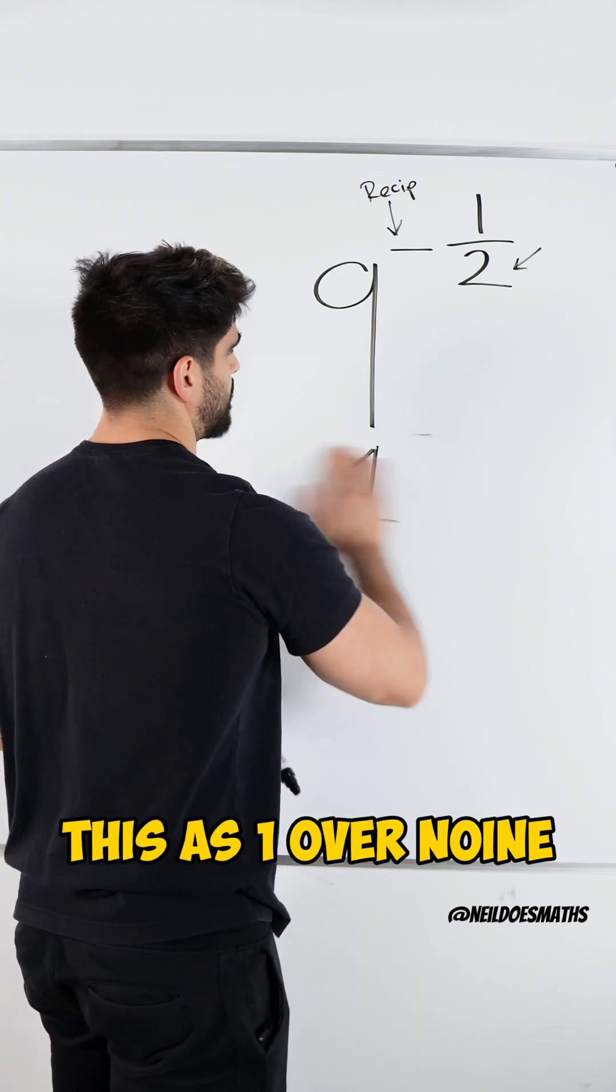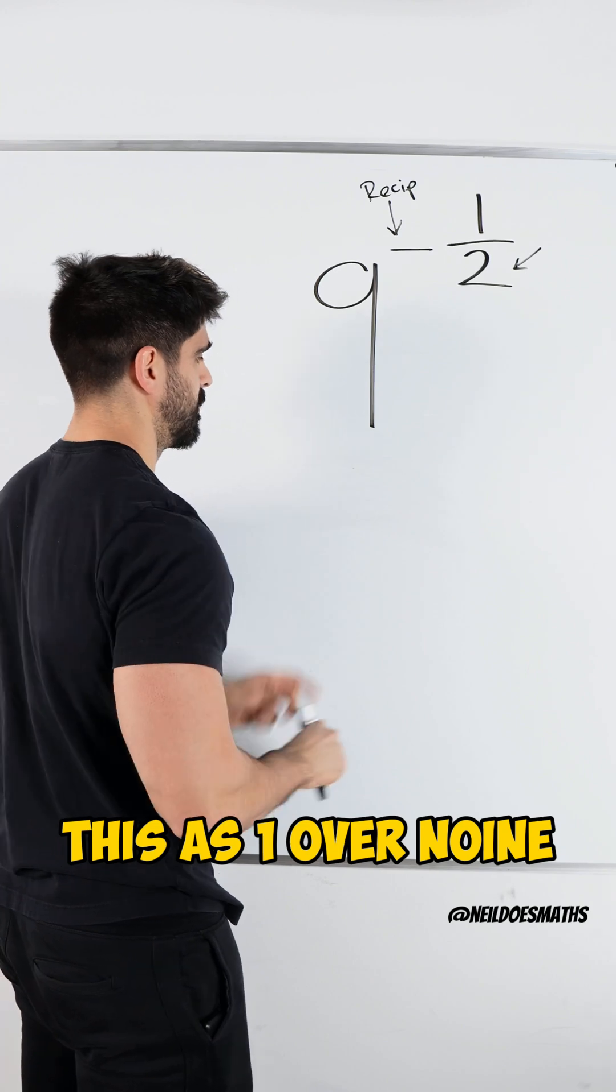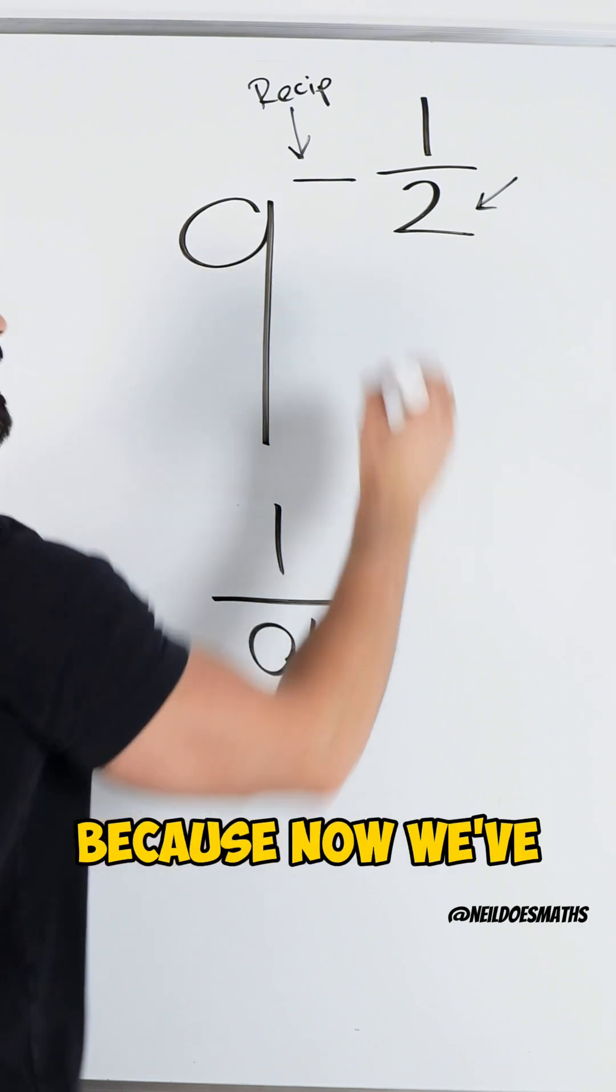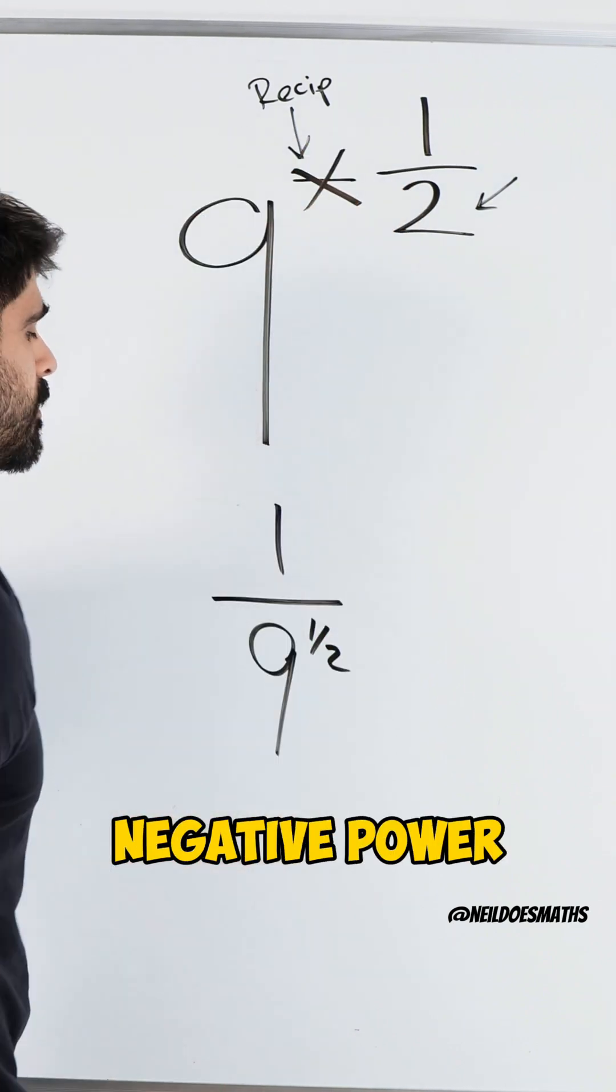So I'm going to rewrite this as 1 over 9 to the power of a half because now we've dealt with the negative power.